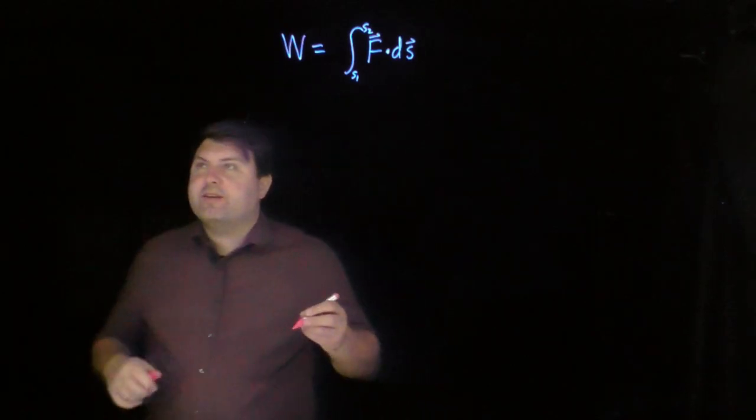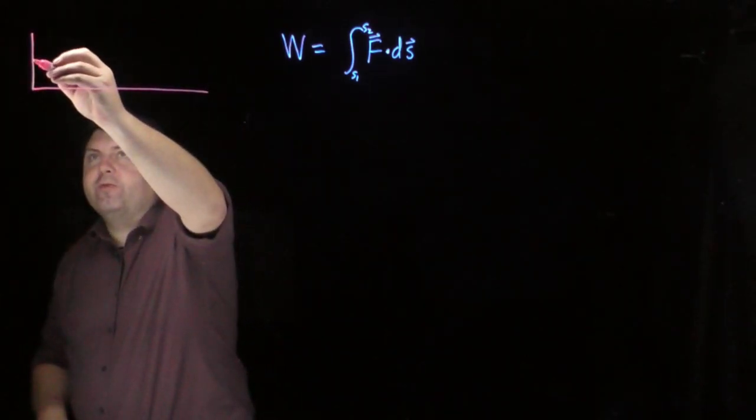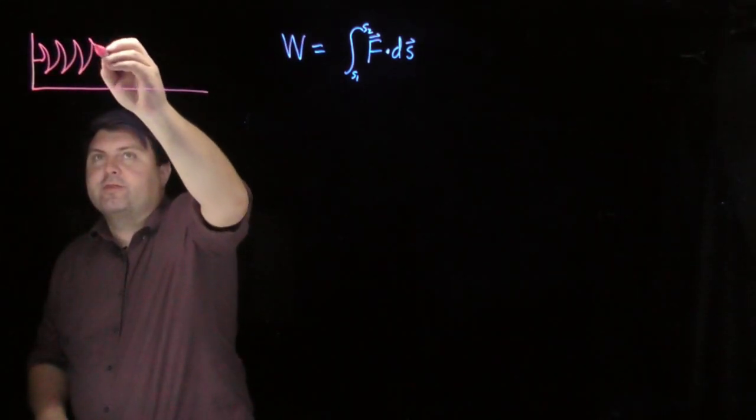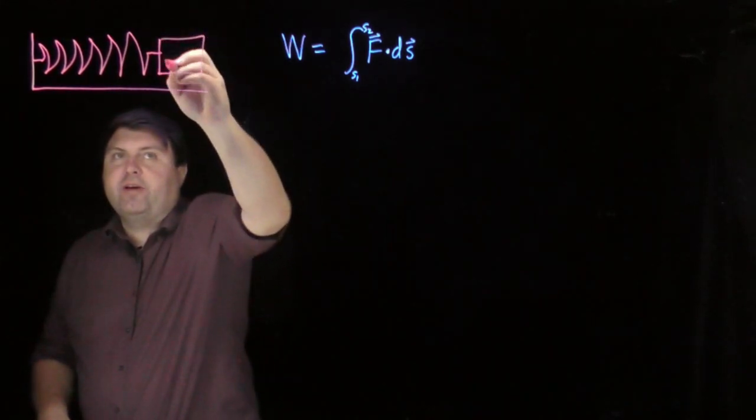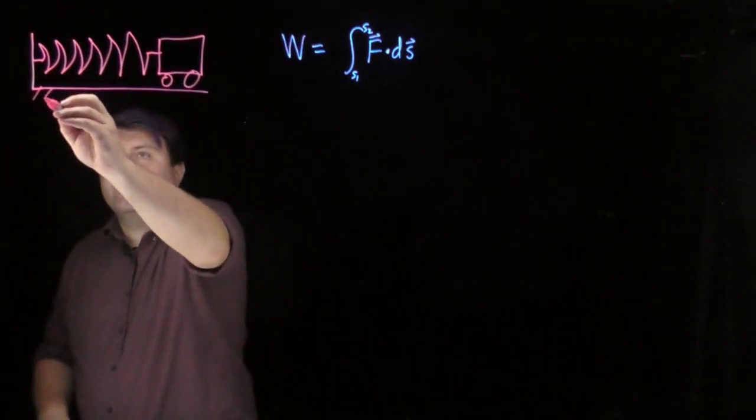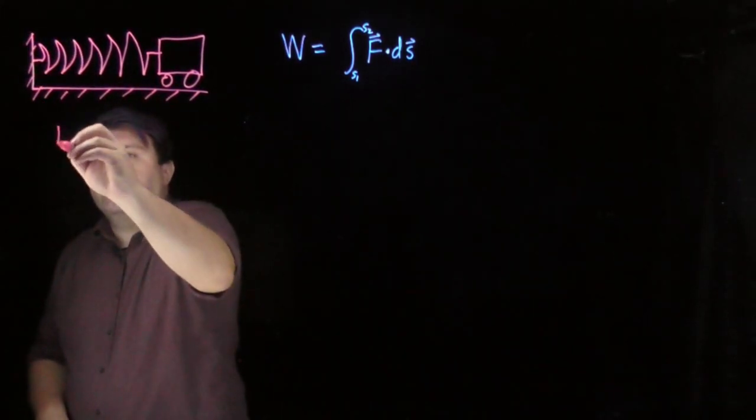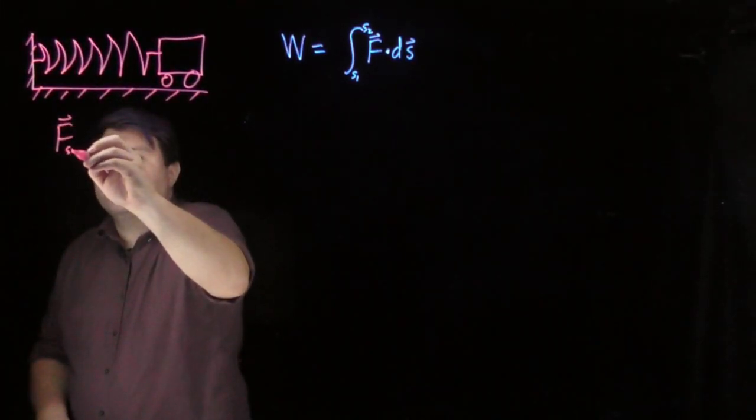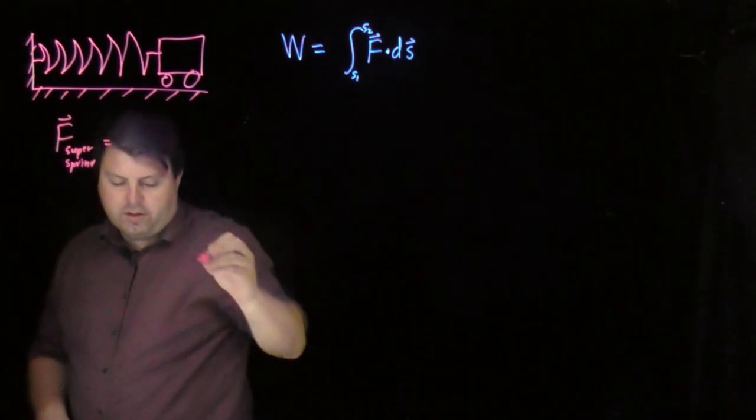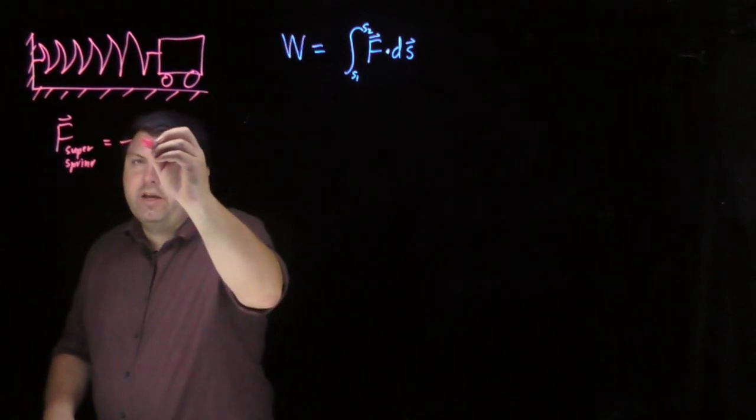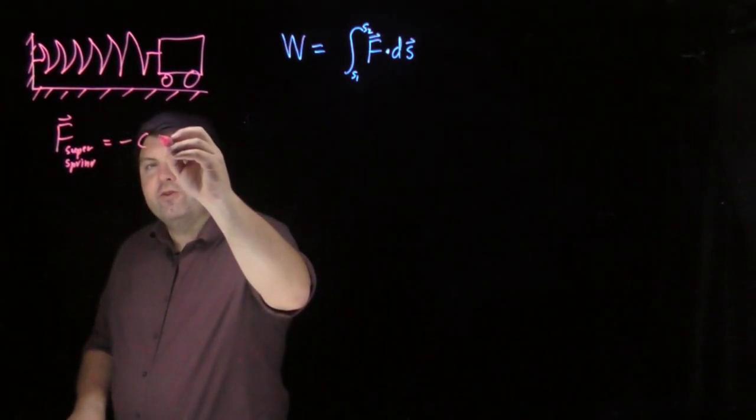Let's invent ourselves a new force, similar to our spring force. We're going to call it a super spring force. Give it a different symbol than our original springs. And we're going to say that the force from our super spring is going to be negative c, for a different constant than k, but instead of x to the first power,